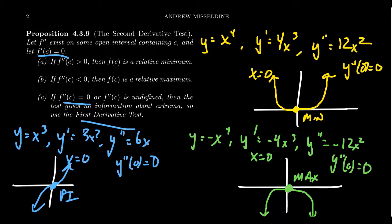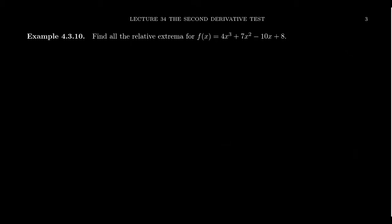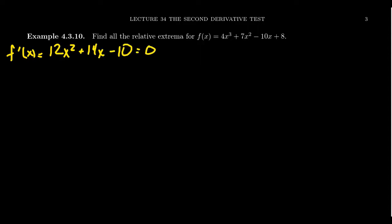But if your first derivative is zero at a point and the second derivative is positive or negative there, you can determine whether it's a max or min using the second derivative test. So let's find all relative extrema for f(x) = 4x³ + 7x² - 10x + 8 using the second derivative test. Whether using the first or second derivative test, we need to calculate the first derivative to find the critical numbers. The first derivative is f'(x) = 12x² + 14x - 10. We want to set this equal to zero.